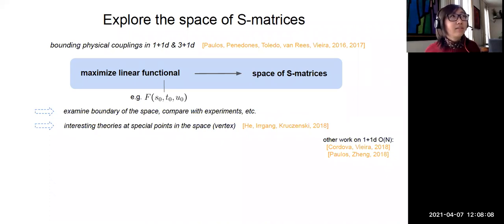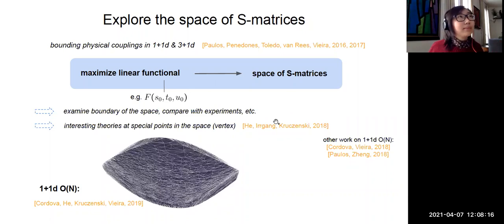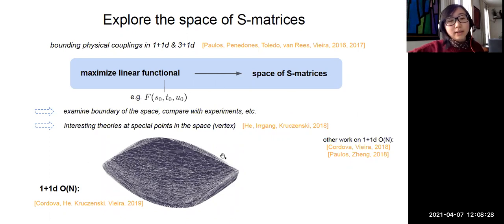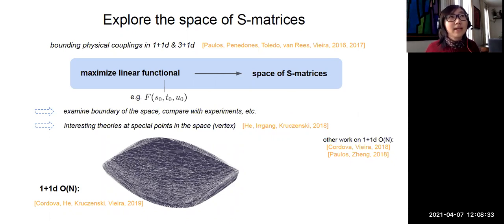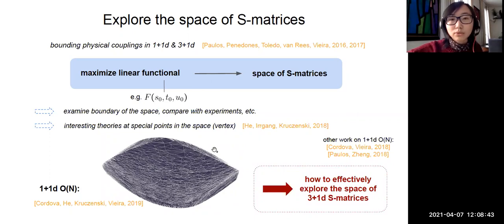Sometimes we also find that interesting theories are located at special points, such as a vertex on the boundary of the space, as seen in the 2D case. In one plus one dimensions we have pretty good control of how to map out this space of S-matrices. Previously, together with Lucia, Martin, and Pedro, we produced a 2D O(N) monolith — a map of the space of O(N) theories in two dimensions. Today I'll describe how to do this effectively for three plus one dimensional S-matrices.